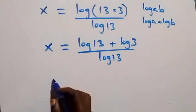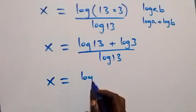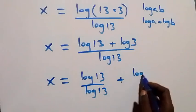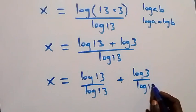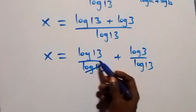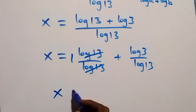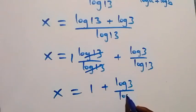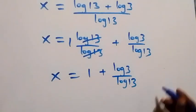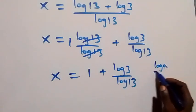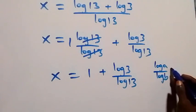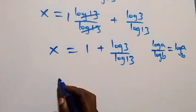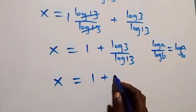We can separate this fraction into two parts: x equals log 13 over log 13 plus log 3 over log 13. The log 13 over log 13 cancels to give one, so x equals 1 plus log 3 over log 13. Applying the change of base formula — log a over log b equals log a to base b — we get x equals 1 plus log 3 to base 13.